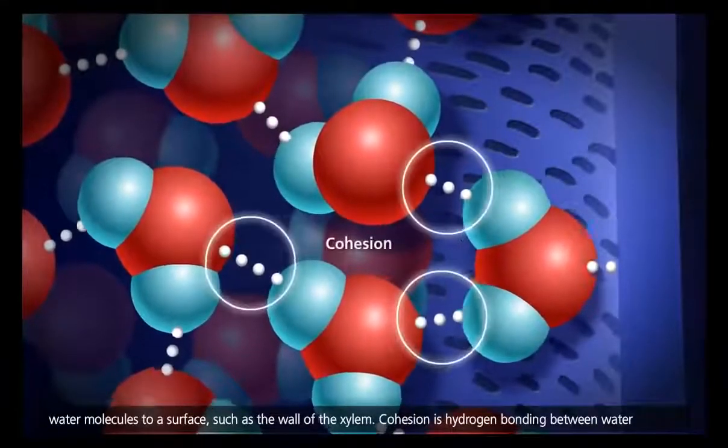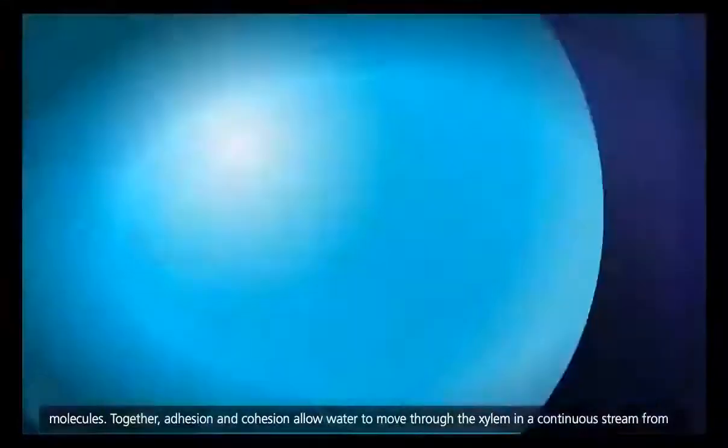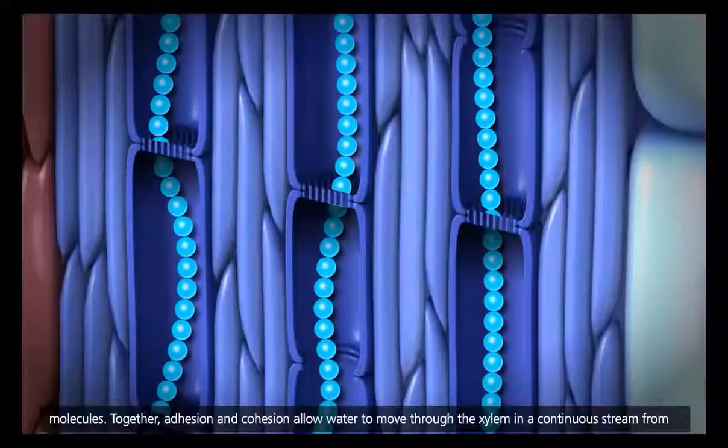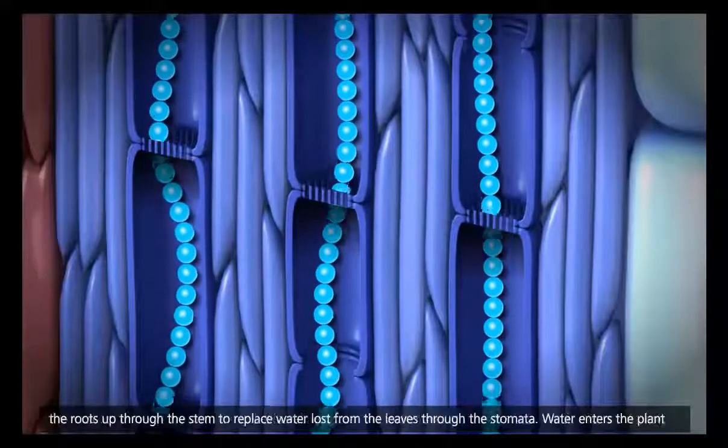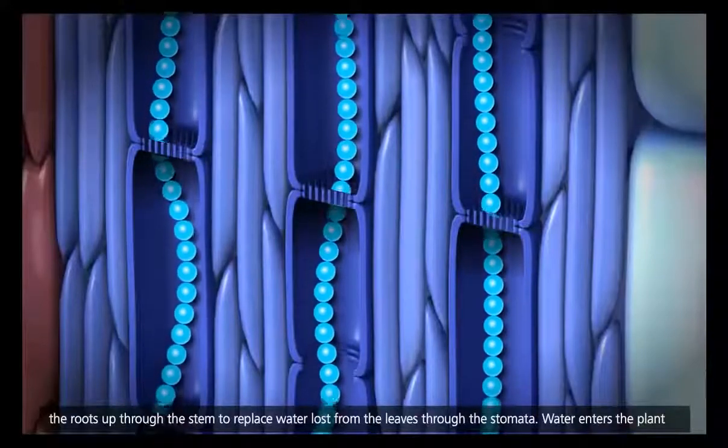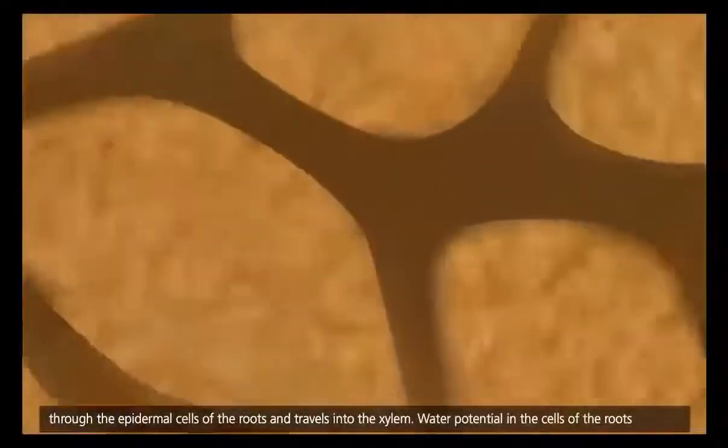Cohesion is hydrogen bonding between water molecules. Together, adhesion and cohesion allow water to move through the xylem in a continuous stream, from the roots, up through the stem, to replace water lost from the leaves through the stomata. Water enters the plant through the epidermal cells of the roots and travels into the xylem.